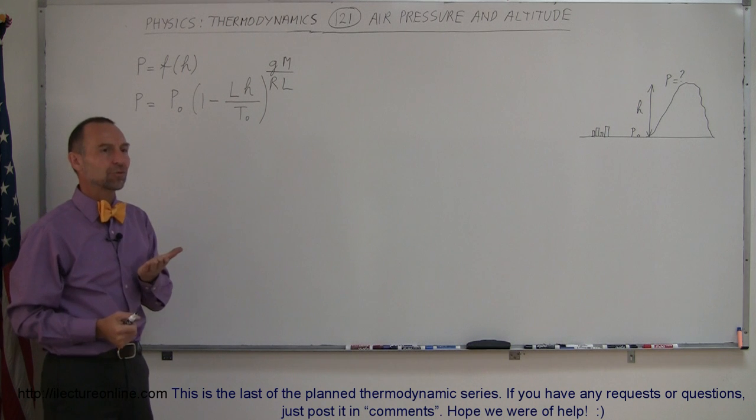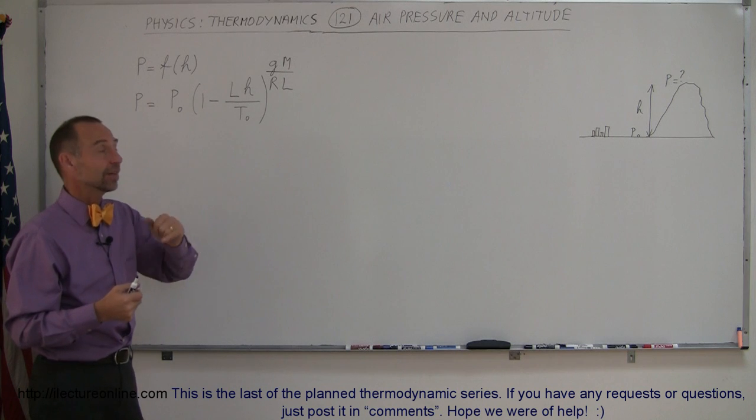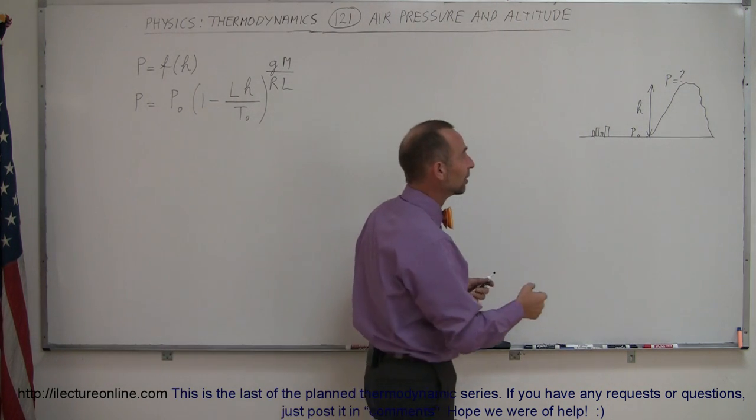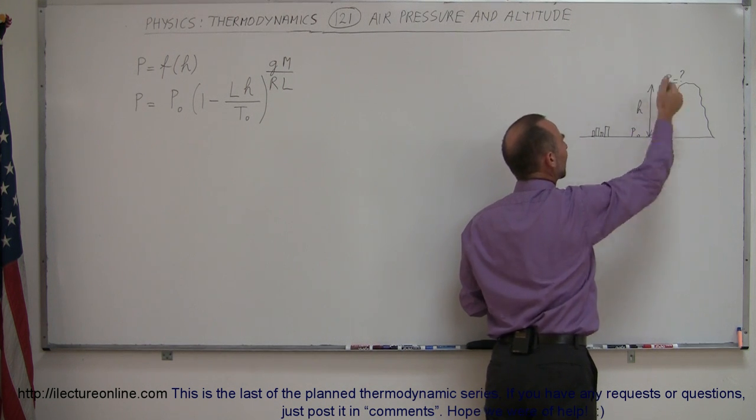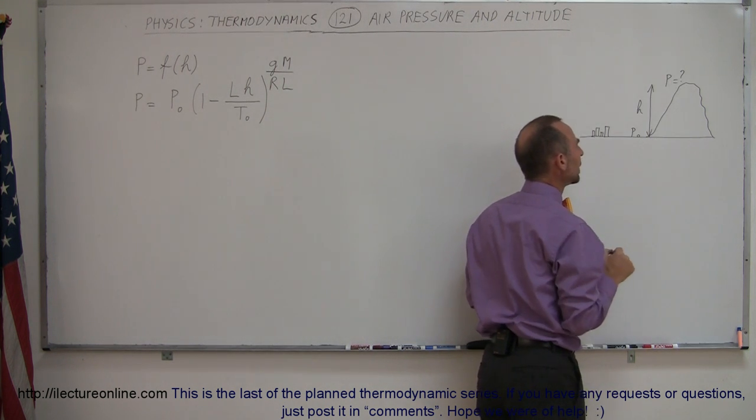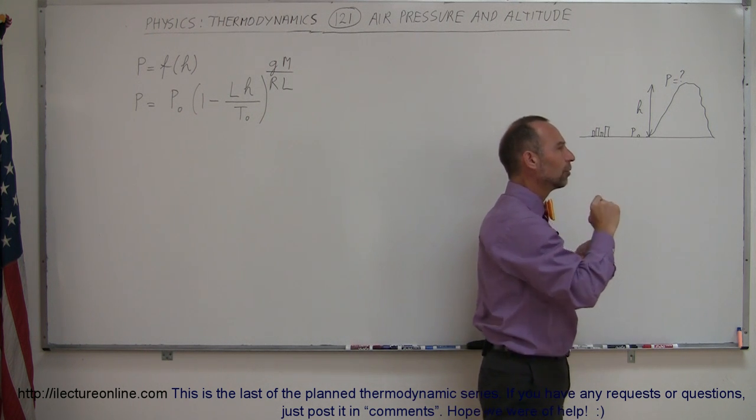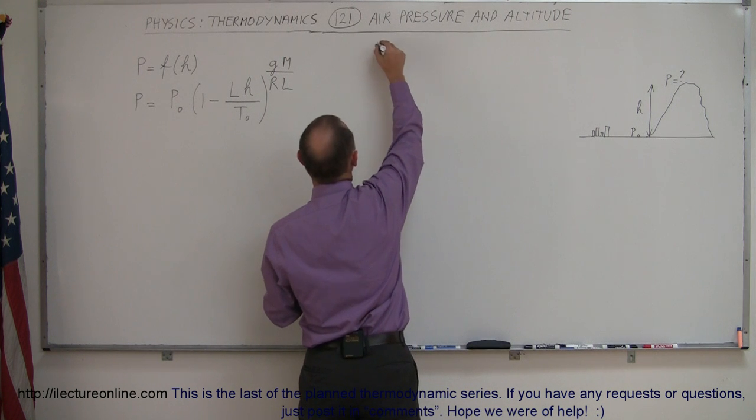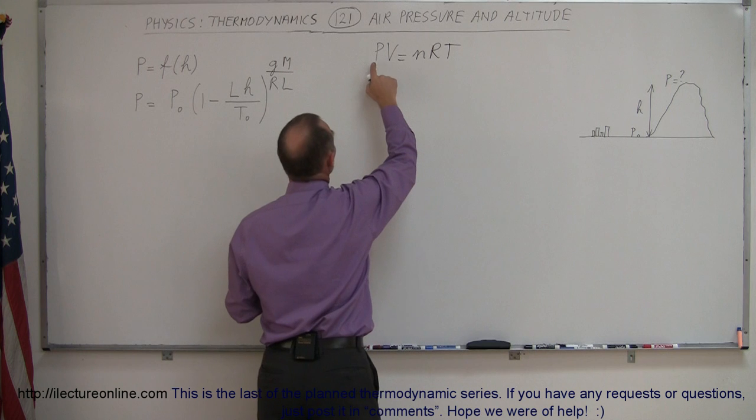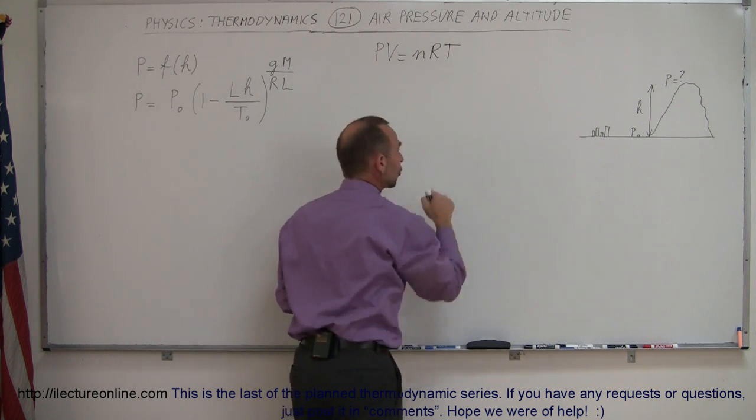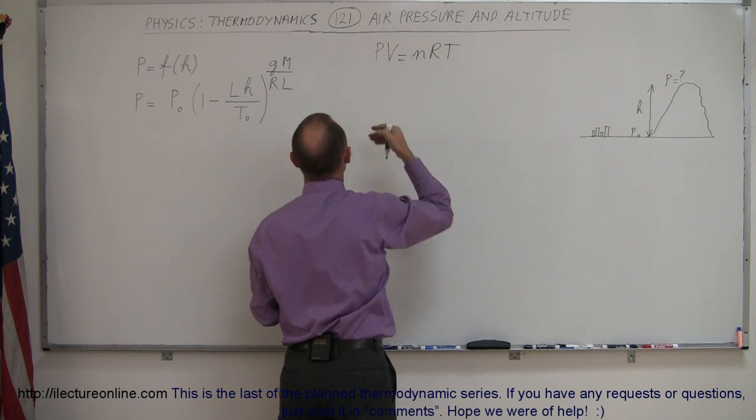L stands for the lapse rate. The lapse rate is the rate at which the temperature decreases with increasing height. So I have a little diagram here. This is supposed to be a city, here's a mountain, and so what's the pressure maybe at the top of the mountain at the height h. We also realize that the temperature decreases as you go further and further up. So that has to be taken into account because if you look at the equation PV equals nRT, we see that the pressure is also relative to the temperature, and so if the temperature decreases then the pressure decreases as well.